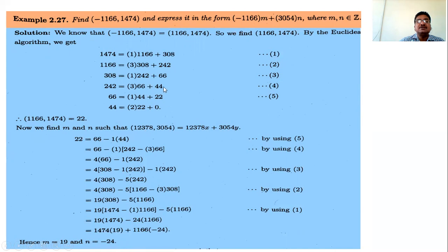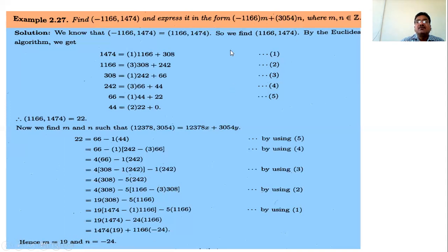Using the same method — the second-last equation — express 22 as 66 minus 44 times 1. Then by successive substitution using previous equations, we get 1474 times 19 minus 1166 times 24. Since there is a negative sign on 1166, m = 24. So for the expression with minus 1166, m is 24.